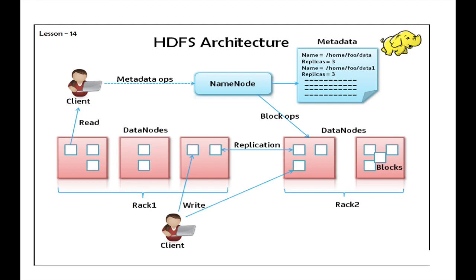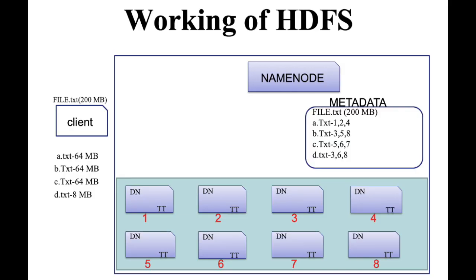Now I am going to explain the working of HDFS. Suppose there is a file and the file size is 200 MB. As per the working rule of HDFS, the file processing size is 64 MB. So the file is divided into 4 parts: the first part is 64 MB, the second is 64 MB, the third is 64 MB, and the last one is 4 MB. This file is directly transferred to the name node through the client, and the name node transfers it to metadata.